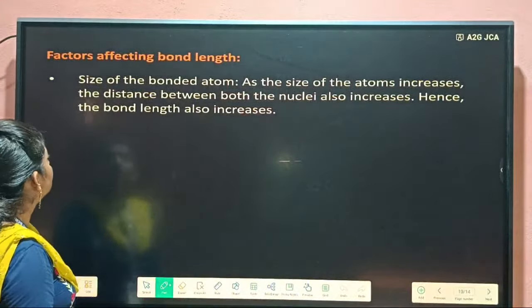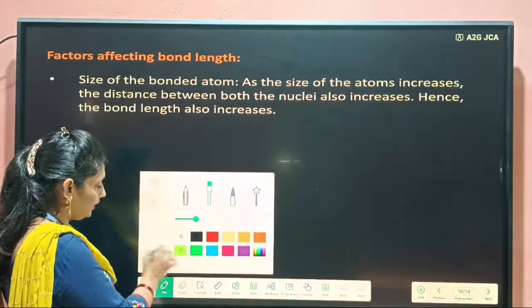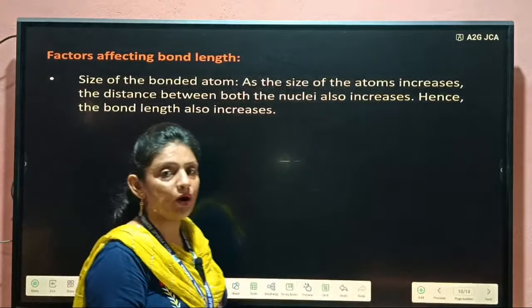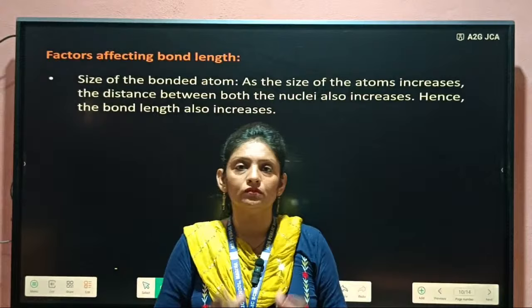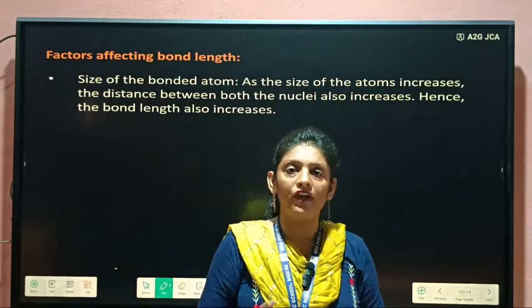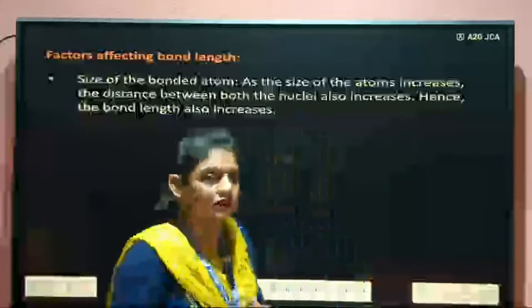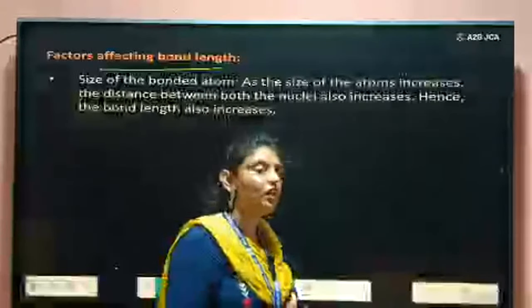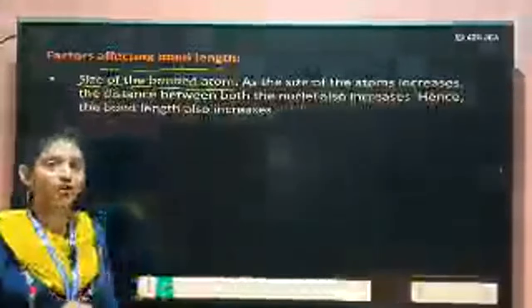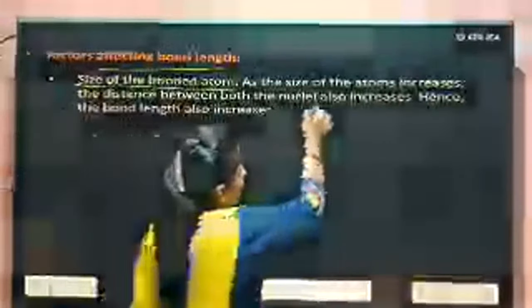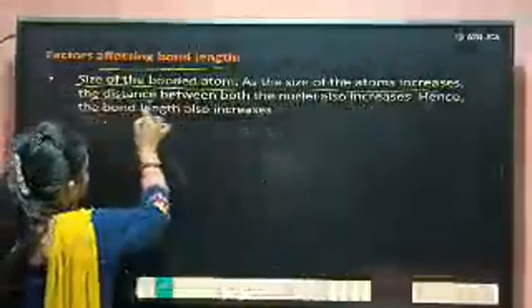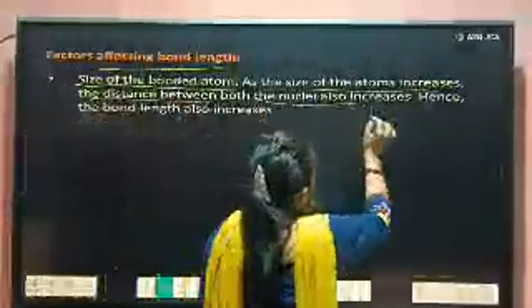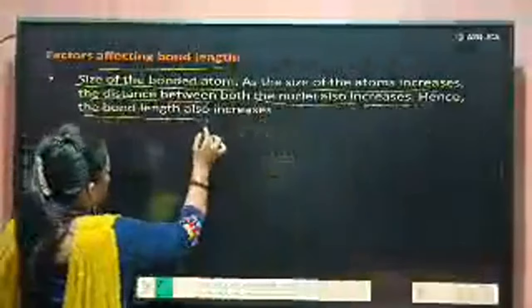Our next factor is what affects the bond length. We have discussed bond order, bond length, bond strength, and bond angle. Now we will discuss the factors affecting bond length. The first factor is the size of the bonded atom. As the size of the bonded atom increases, the distance between both the nuclei also increases, and hence the bond length also increases.